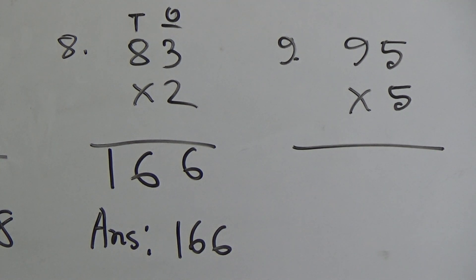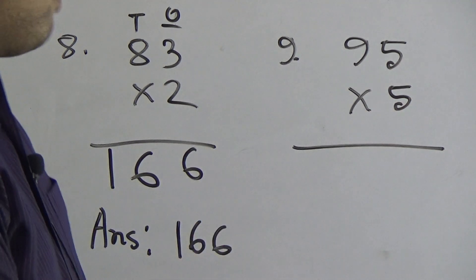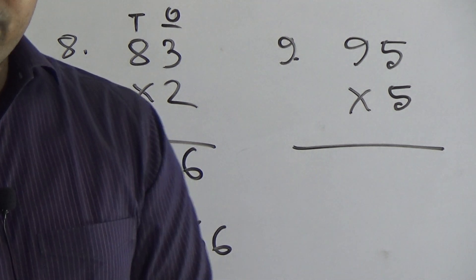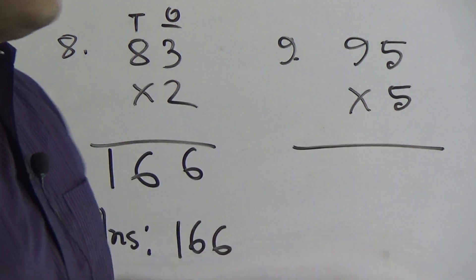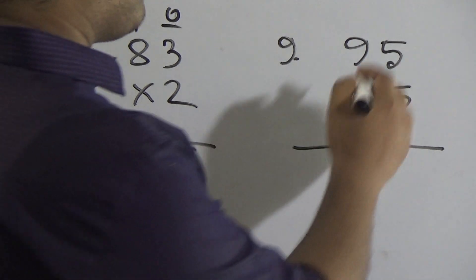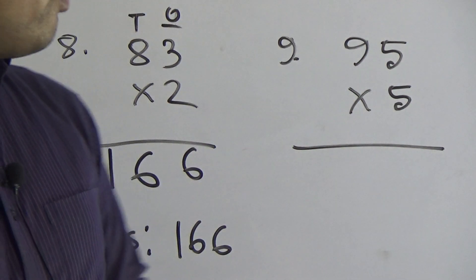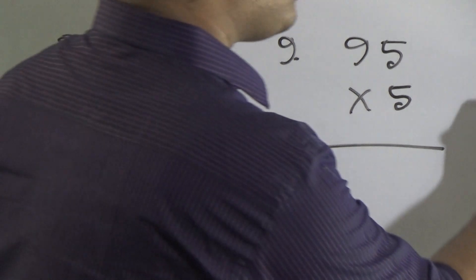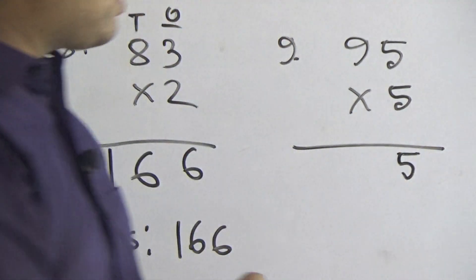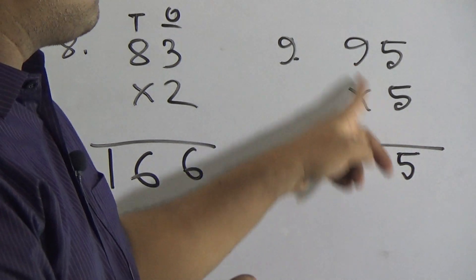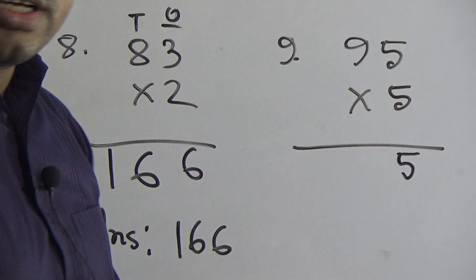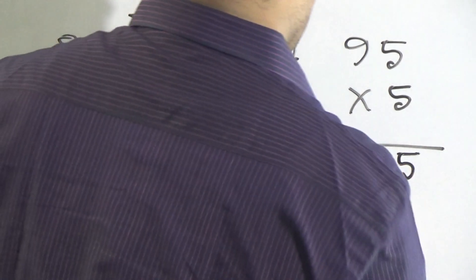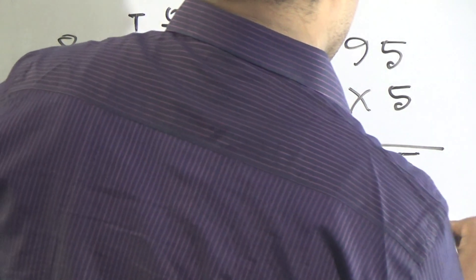Our last question of today's lecture: 95 multiplied by 5. Do you know times table 5? I hope you do, because I know you are very smart learners. First we multiply 5 by 5: 5 fives are 25. From 25, I write 5 here and carry the 2. That 2 is added with the multiplication of 9 by 5: 9 fives are 45, and adding carrying 2 gives 47. So 475 is the answer.